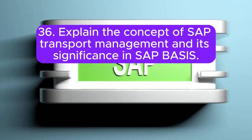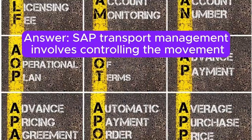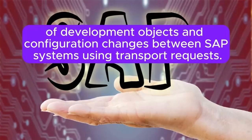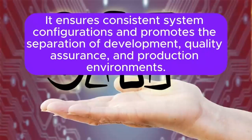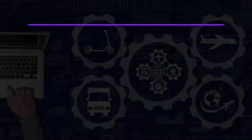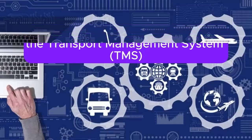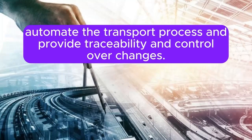Question 36: Explain the concept of SAP transport management and its significance in SAP BASIS. SAP transport management involves controlling the movement of development objects and configuration changes between SAP systems using transport requests. It ensures consistent system configurations and promotes the separation of development, quality assurance, and production environments. Transport management tools like the Transport Management System (TMS) automate the transport process and provide traceability and control over changes.